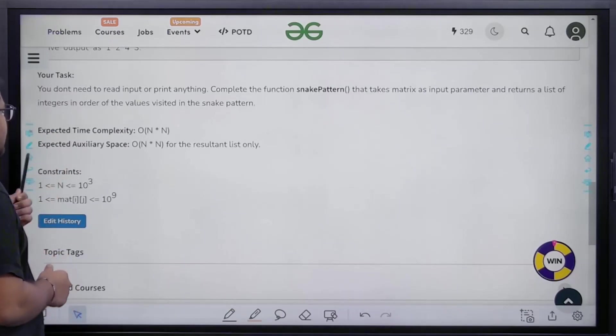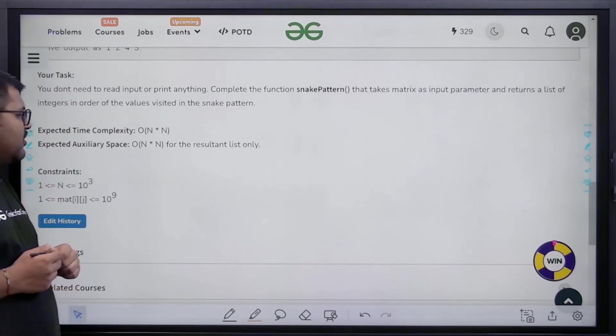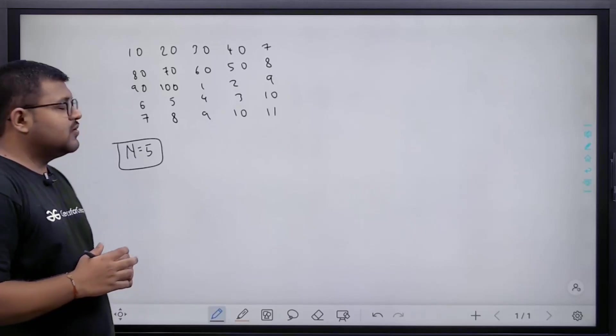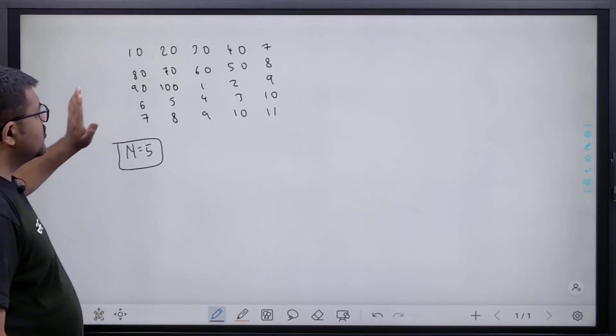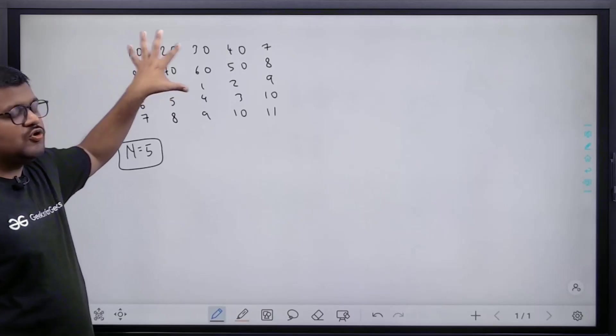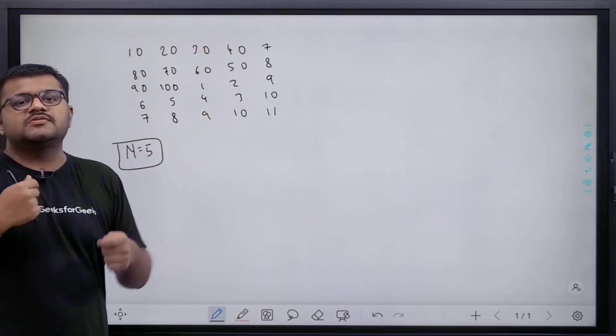The expected time complexity is O(n squared) and expected auxiliary space is also O(n squared). Now if we think about solving this problem, let us assume that this is a matrix of 5 cross 5 size which is given to us. We need to print this matrix in the snake pattern.